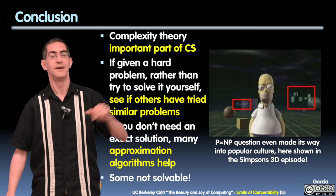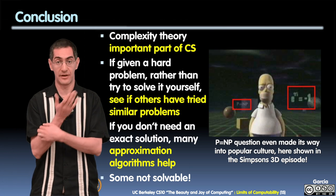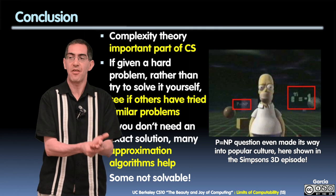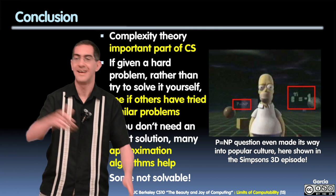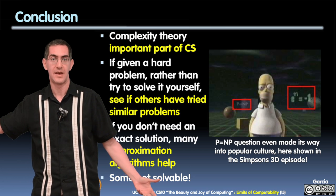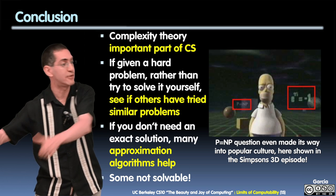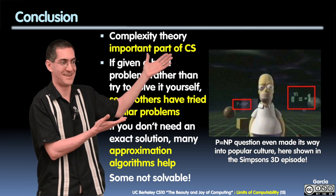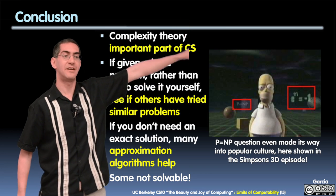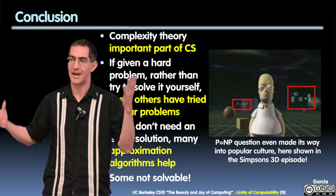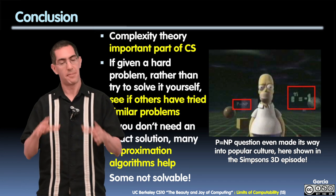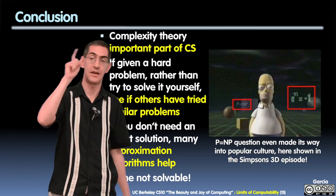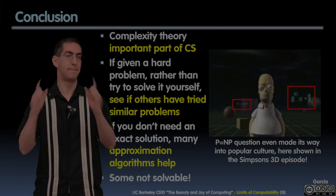Takeaways: complexity is a really important part of CS, especially theoretical CS. If you're given a hard problem, rather than bang your head against the wall, look around and see if others have solved it — maybe you can reduce your problem to their solution, like Googling first. If you don't need an exact solution, consider an approximation. And if you do need an exact answer, sometimes those are hard — and some are not solvable. We'll see that unsolvable problem first thing on Wednesday.